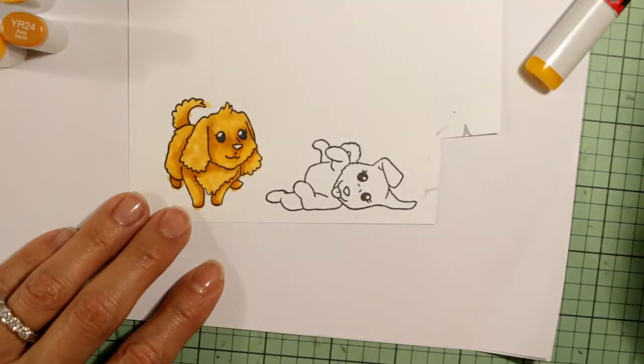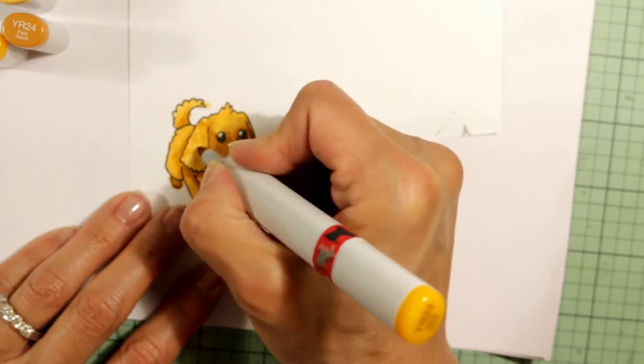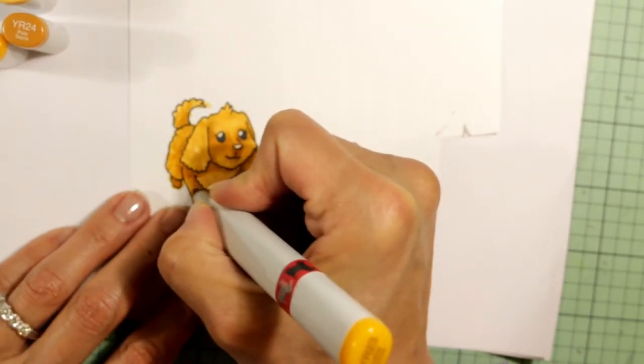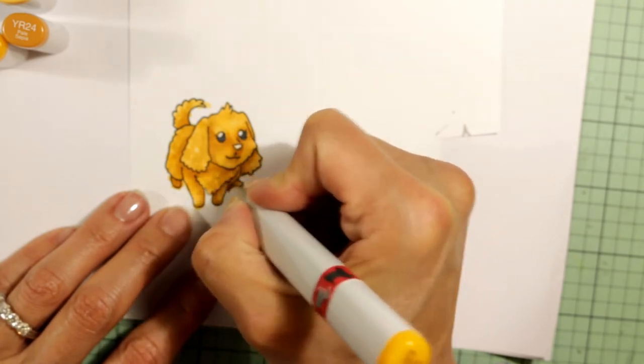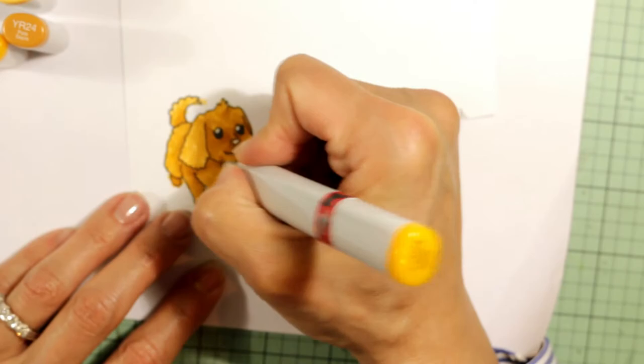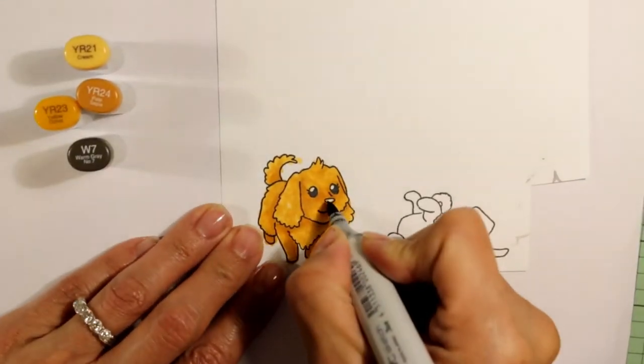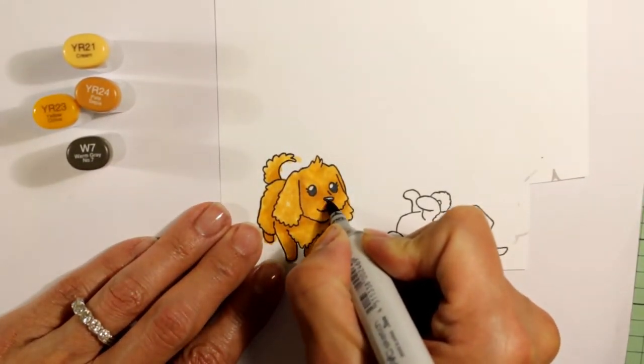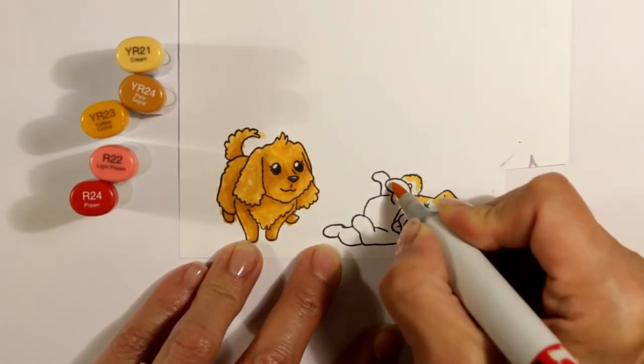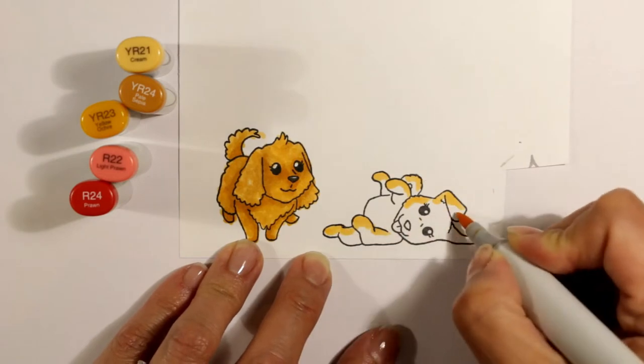You can see I'm just going back in, going back and forth between the lightest to the darkest to make sure that I have a good sense of dimensionality. With adding the darkest areas in the shadowed areas, I really get a nice three-dimensional look. For the nose I used a W7.